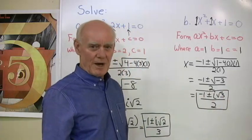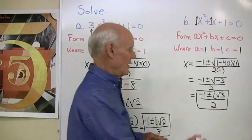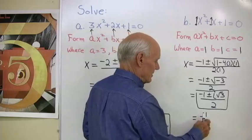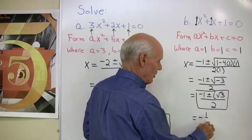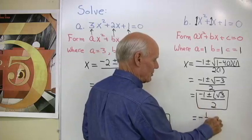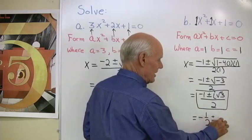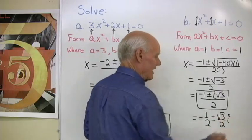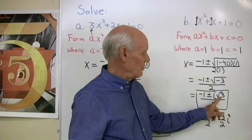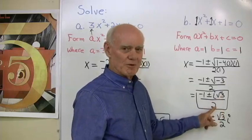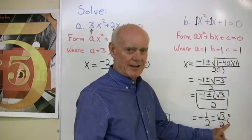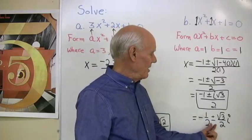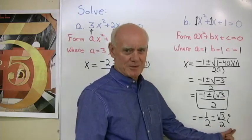Now if you want to, and you want to write this in standard form for a complex number, you can say, well, this is negative 1 over 2, that's that, over 2, plus or minus square root 3 over 2 times i. So this i times square root 3 all divided by 2, I can write that as square root 3 over 2 just times i on the outside. And then this looks like standard form for a complex number A plus or minus B times i.